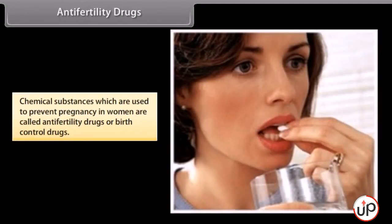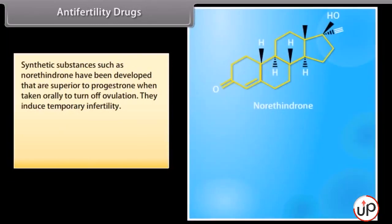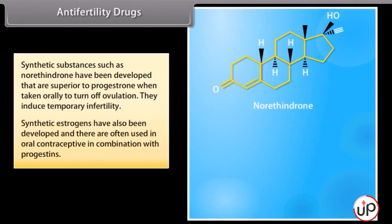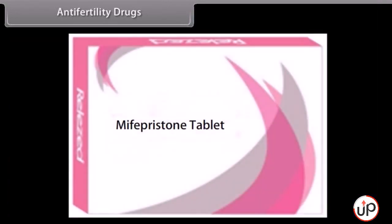Anti-fertility drugs: chemical substances used to prevent pregnancy in women are called anti-fertility drugs or birth control drugs. Progesterone is the most common progestin. Synthetic substances such as norethindrone have been developed that are superior to progesterone when taken orally to turn off ovulation; they induce temporary infertility. Synthetic estrogens have also been developed and are often used in oral contraceptives in combination with progestins. A very potent synthetic estrogen is the compound called ethinyl estradiol. Mifepristone is a synthetic steroid that blocks the effects of progesterone and is used as a morning-after pill in many countries.